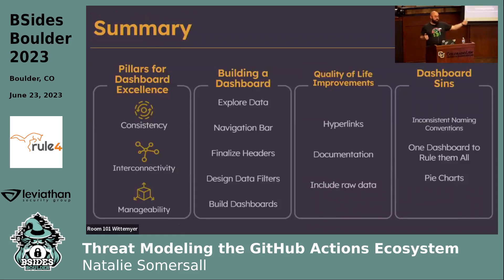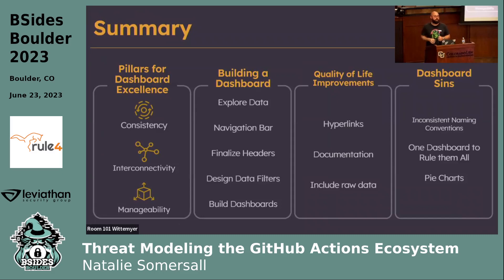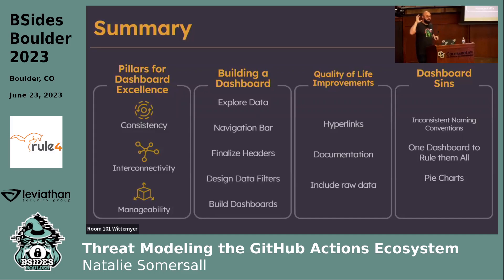So to wrap up: we talked about the three pillars — consistency, interconnectivity, and manageability. We talked about the steps of building dashboards: exploring the data, building out the nav bar and header, designing smart data filters, and finally building the dashboards themselves. Quality of life improvements: make hyperlinks easy, build documentation right into your tool, include raw data close to the dashboards. And the dashboard sins: name things consistently, split up your data sources, and avoid pie charts.